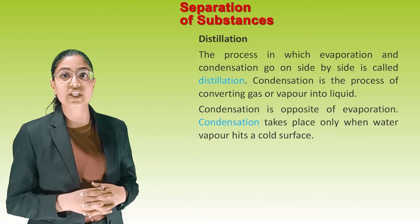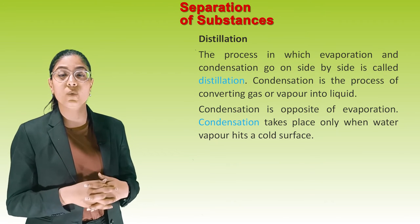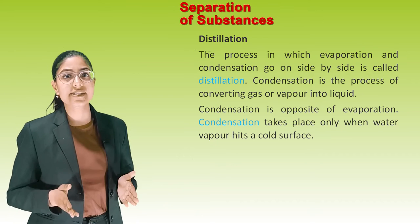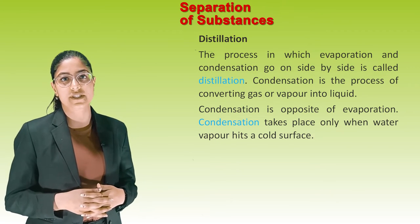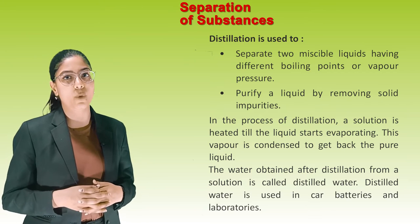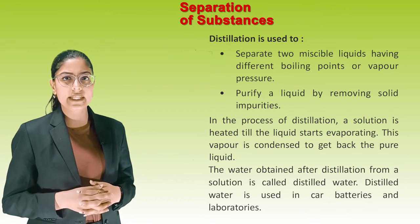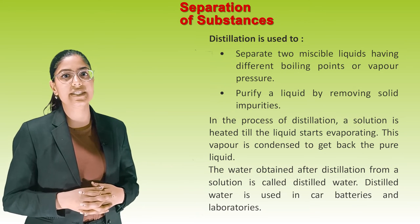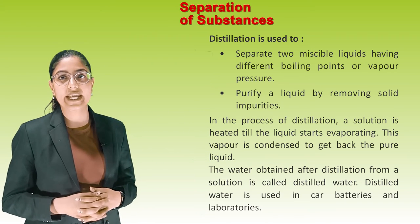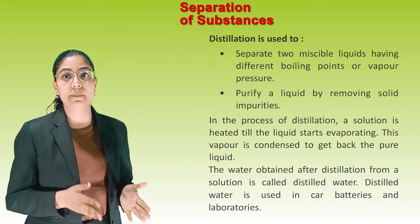Distillation: The process in which evaporation and condensation occur side by side is called distillation. Condensation is the process of converting gas or vapor into liquid, and it is the opposite of evaporation. Condensation takes place when water vapor hits a cold surface. Distillation is used to separate two miscible liquids with different boiling points or vapor pressure, and to purify a liquid by removing solid impurities. The water obtained after distillation is called distilled water, which is used in car batteries and laboratories.